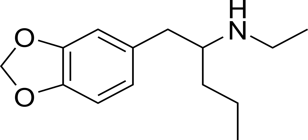It is the N-ethyl analogue of 1,3-benzodioxylpentanamine. Ethyl-K was first synthesized by Alexander Shulgin. In his book PiHKAL, the minimum dosage is listed as 40 mg and the duration is unknown. Very little is known about the pharmacology, pharmacokinetics, effects, and toxicity of Ethyl-K.